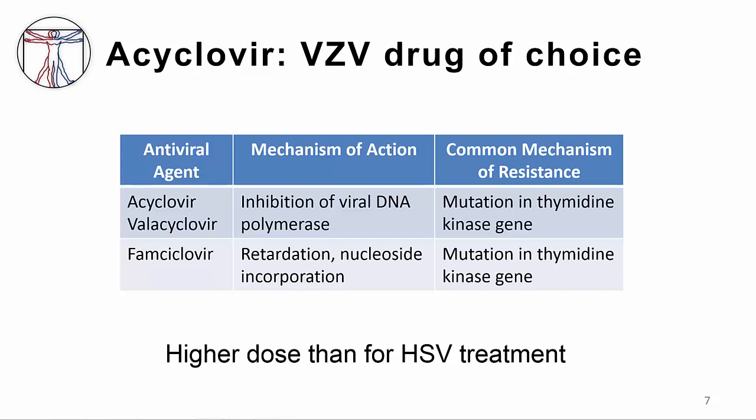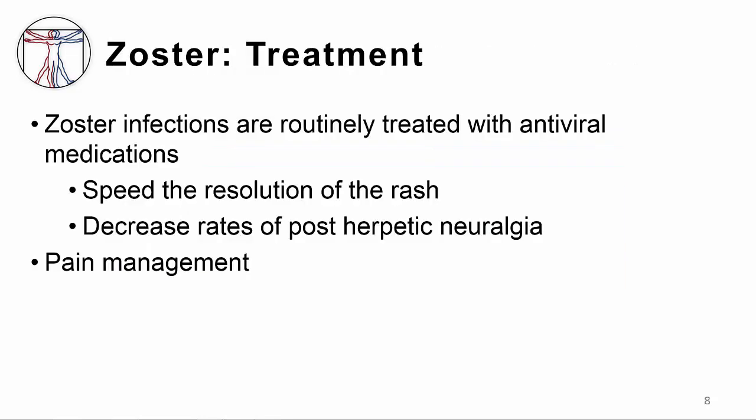The mechanism of resistance is the same for both viruses as shown in the table. Famciclovir is an alternative that you may also see used. For patients with zoster, antiviral medications — acyclovir, valacyclovir, famciclovir — speed the resolution of the rash and decrease the rate of post-herpetic neuralgia, particularly in older patients. Pain management is critical for the management of this illness.